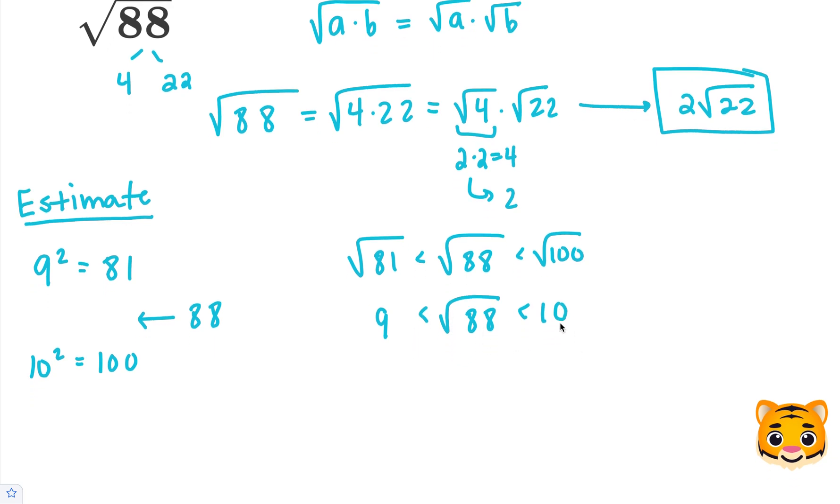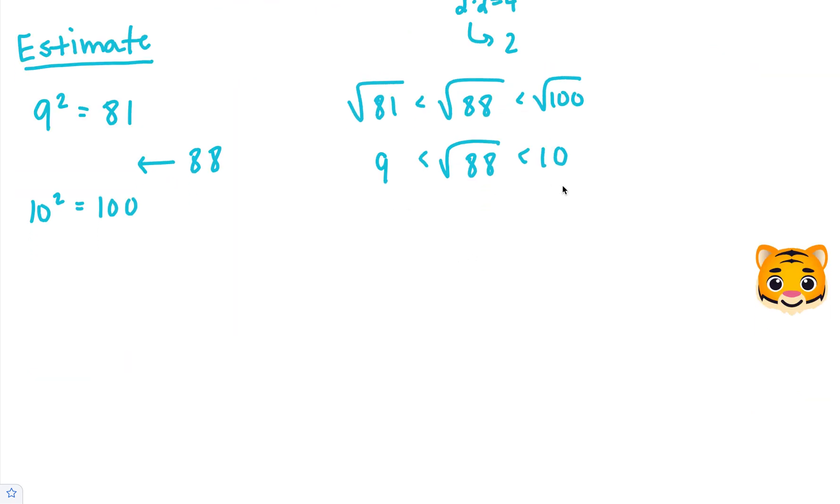To find a tenths place approximation, we want to look at values close to 9 and 10 that we can multiply to get 88. Because 88 is closer to 81 than to 100, we'll look for numbers closer to 9. Let's try 9.4 times 9.4.